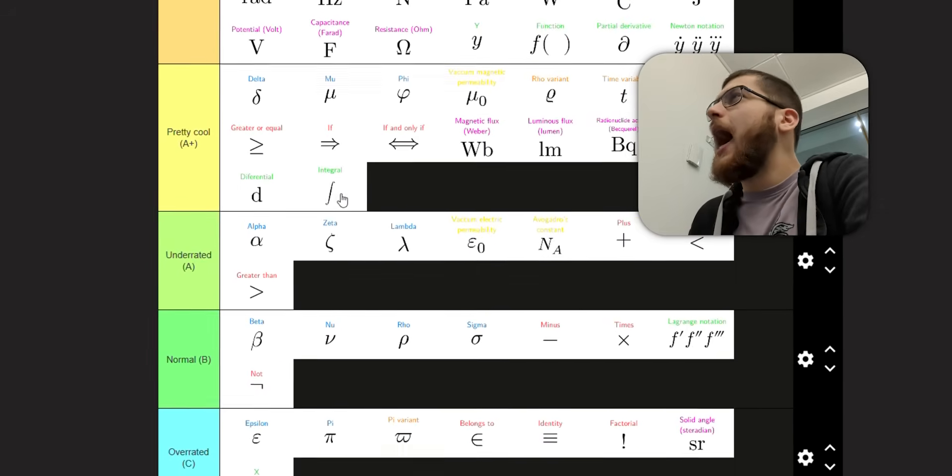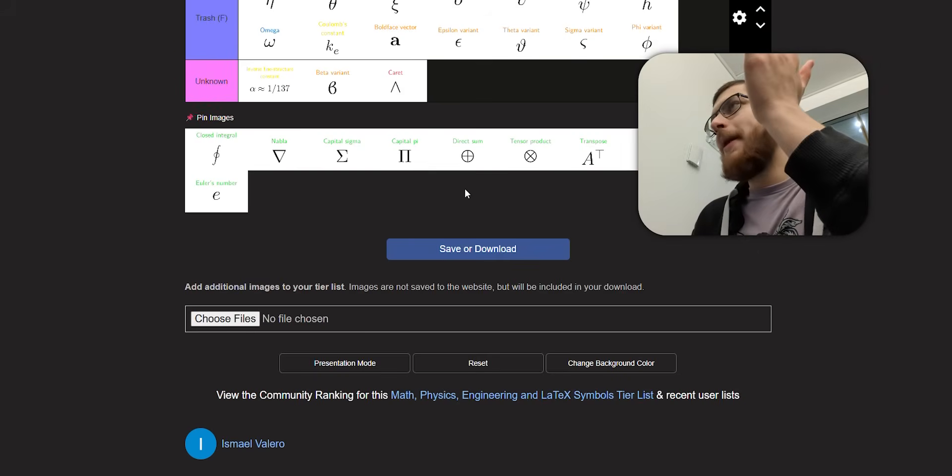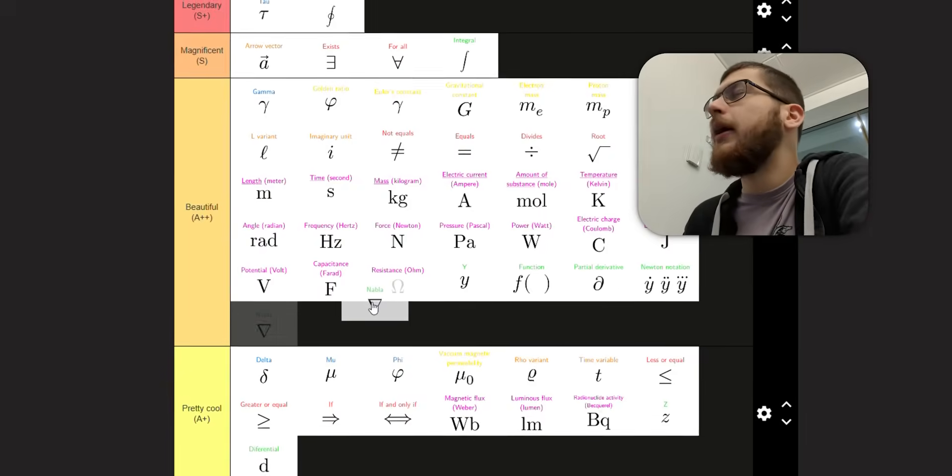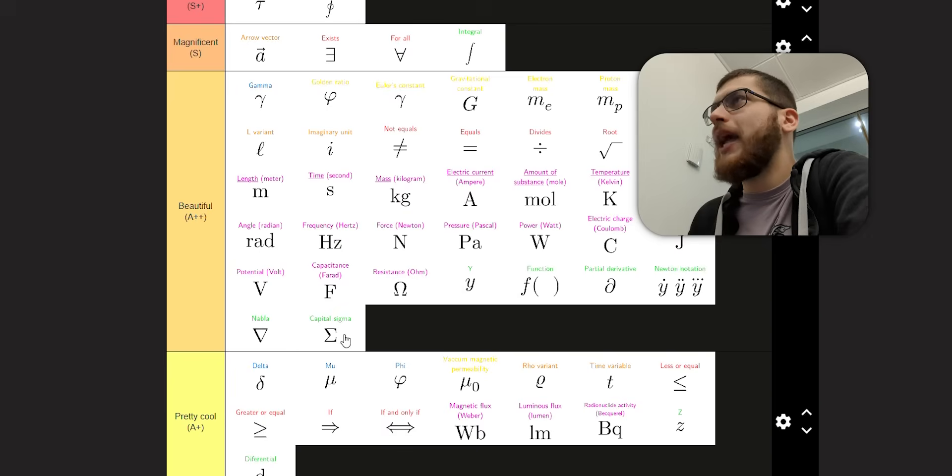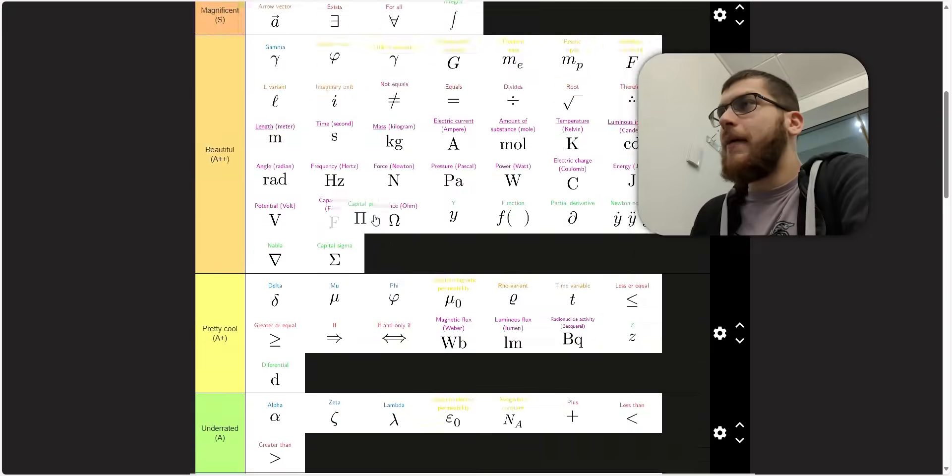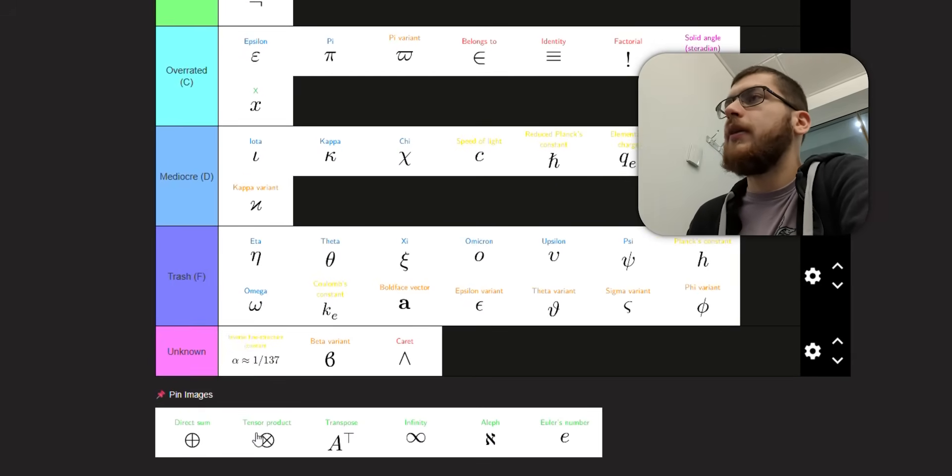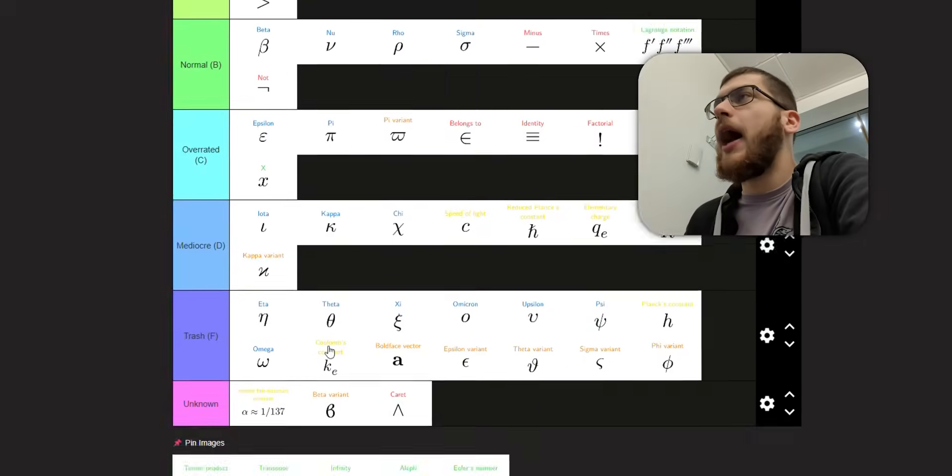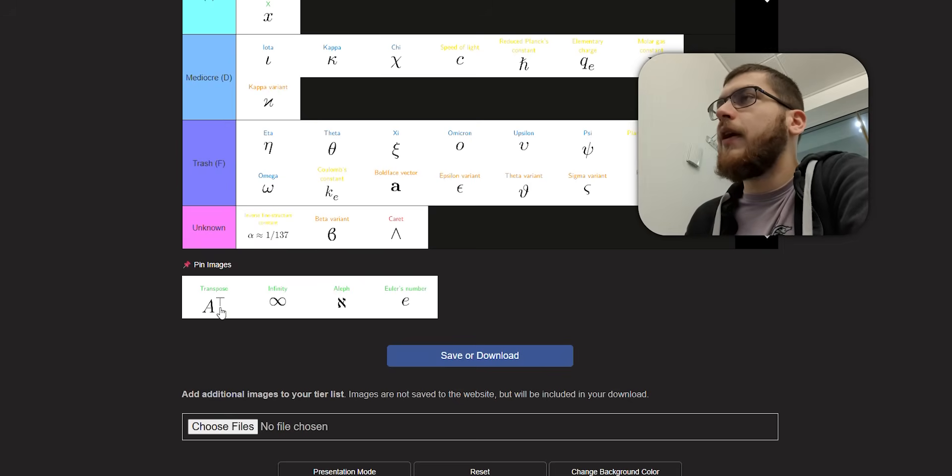This integral sign, I like it a lot. I think that everybody, every mathematician likes it. It's a bit magnificent. Closed integral makes perfect sense. Nabla, it's all right. It's a good symbol. It's easy to write. It's beautiful. Capital sigma for sum. Yeah, that's a very nice symbol. Capital pi for product is obvious. It makes perfect sense. Direct sum and tensor product. These are just sum and product, but with circles around them. And I think that makes them instantly very intuitive and very beautiful.